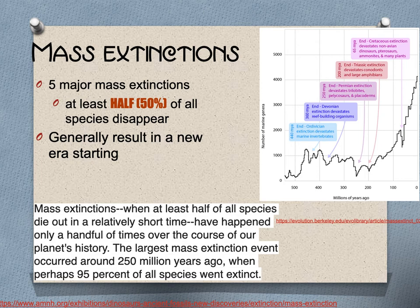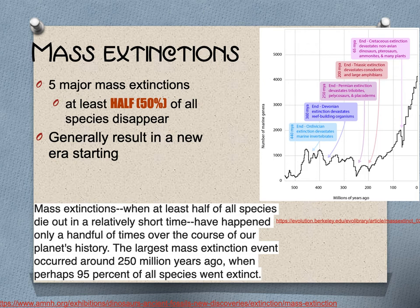You need to be aware of mass extinction events, where at least half of all species disappear. This generally results in a new geologic era beginning. There was a huge one at the Permian, which coincides with the breakup of Pangea — all kinds of volcanoes going off, very harsh for life. Those species left behind then seeded the new forms of life we're familiar with today.